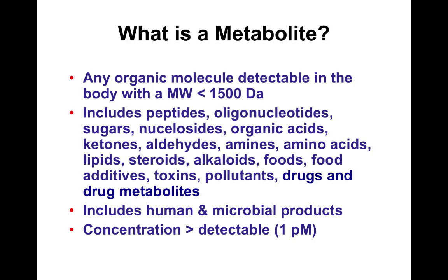There are many other things we also need to include, particularly from food: plant alkaloids, food additives, toxins, and pollutants. It also includes the drugome and drug metabolites. Many of you studying the microbiome will know it also includes microbial products from the gut. The metabolome is essentially defined by what we can detect, so its size grows with improved detection. The current lower detection limit is perhaps a few picomolar, most things nanomolar and above.